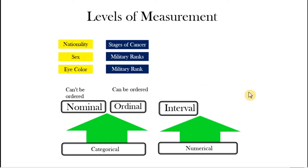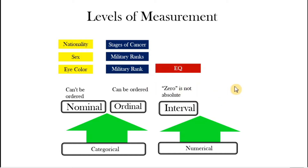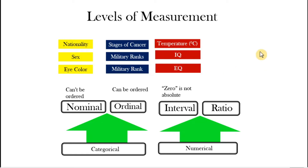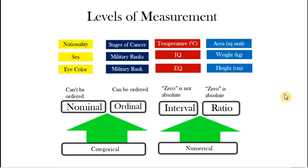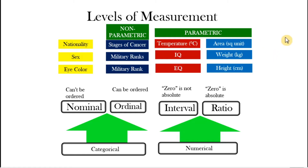Numerical variables are either interval or ratio. For interval variables, zero is not absolute — a zero value does not mean the variable is absent. Examples include emotional quotient, intelligence quotient, and temperature: zero degrees Celsius doesn't mean temperature doesn't exist. For ratio, zero is indeed absolute. Examples are height, weight, and floor area — a height of zero centimeters means the entity does not exist. For ordinal variables we apply non-parametric tests, and for interval and ratio variables parametric tests are applicable.